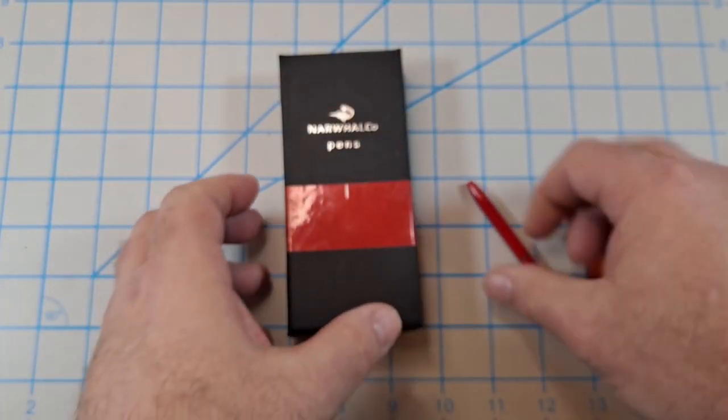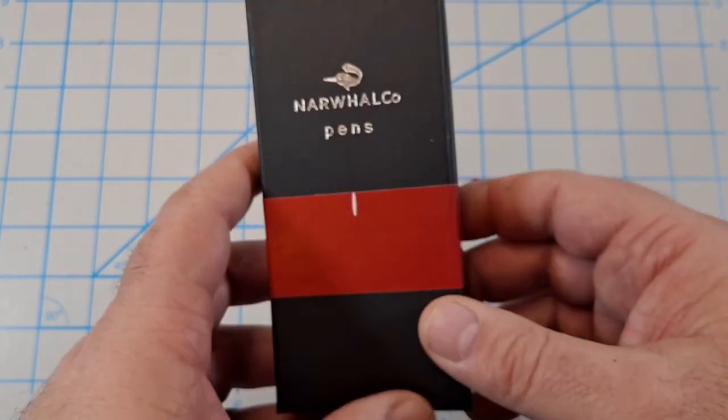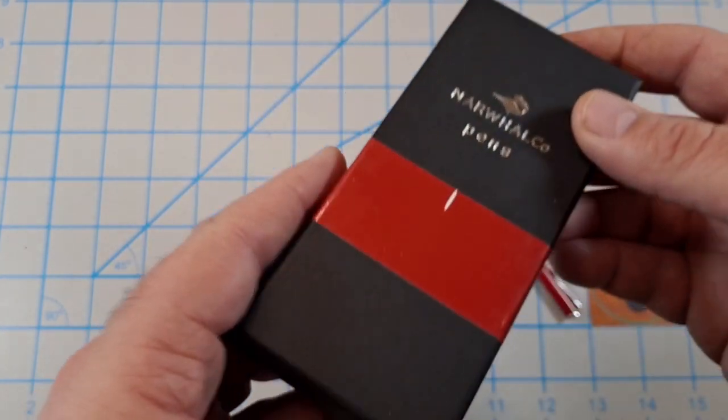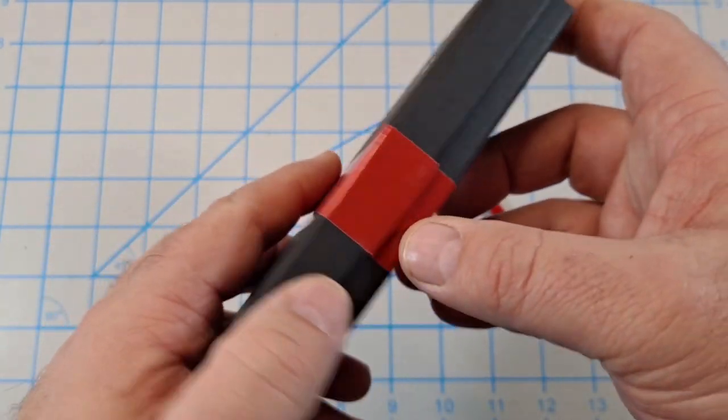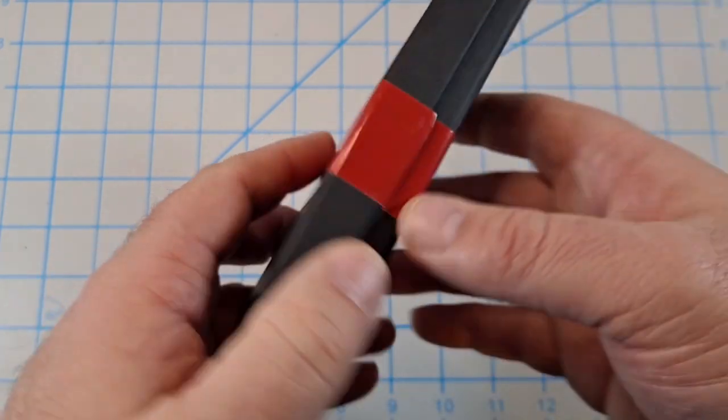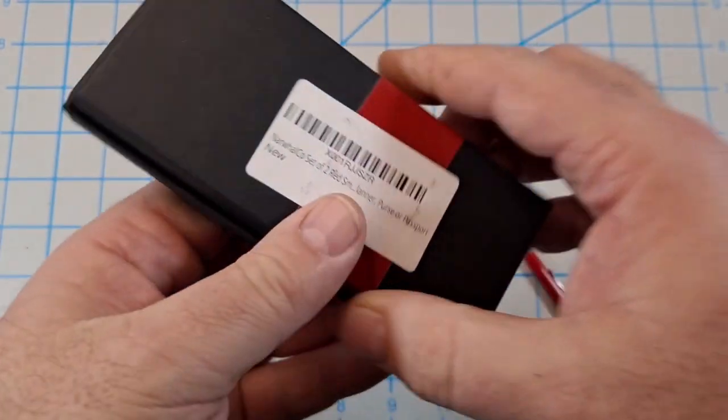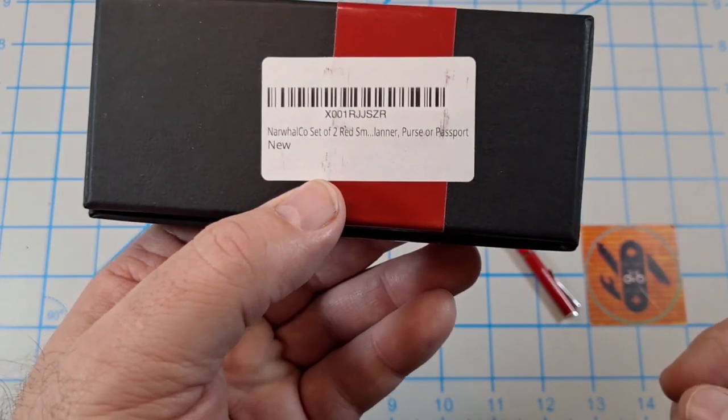Before we get more into that, I'll show you the box it came in. Came in this pretty nice little box, had this red tape around there. I just sliced it right there. On the back is just the Amazon barcode.